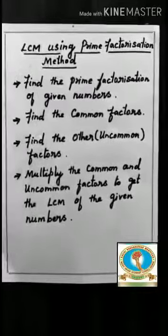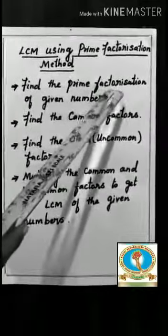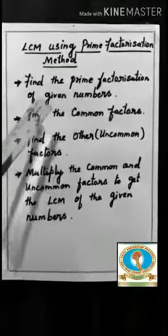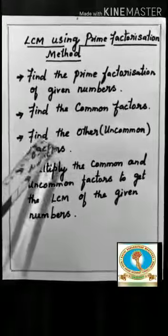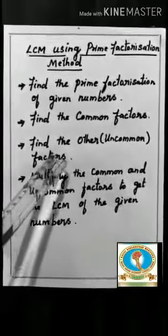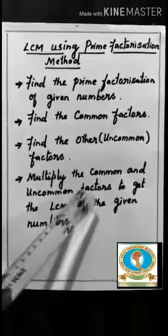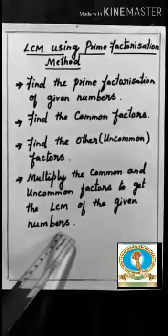First let us revise how to find LCM. First find the prime factorization of given numbers. Find the common factors. Next find the other factors or uncommon factors. Finally multiply the common and uncommon factors so that we get the LCM of the given numbers.